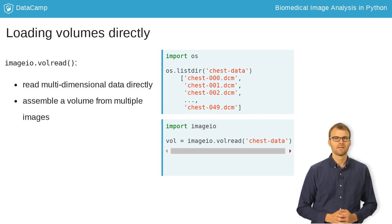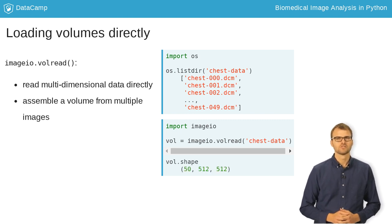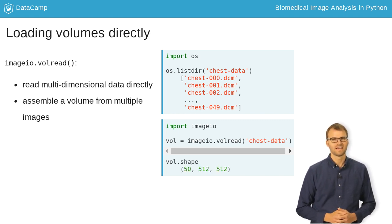Since these are DICOM images, the function actually checks the available metadata to make sure that the images are placed in the correct order. Otherwise, it will default to alphabetical order. Displaying the shape attribute shows us that we have 50 images stacked together.